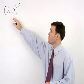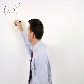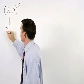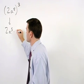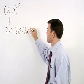In this problem, 2a to the fifth to the third can be thought of as 2a to the fifth times 2a to the fifth times 2a to the fifth.